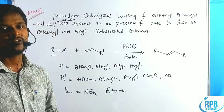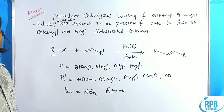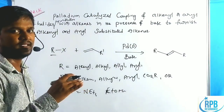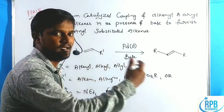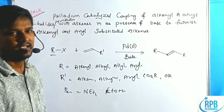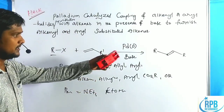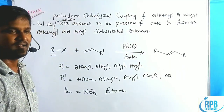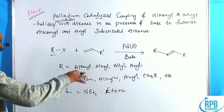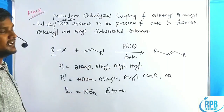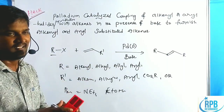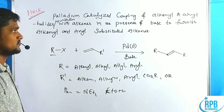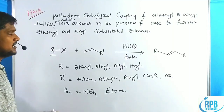Without a base, the Heck cross-coupling reaction does not proceed. In the presence of a base, it furnishes the alkene product. This is the simplest description about the palladium-catalyzed Heck cross-coupling reaction.